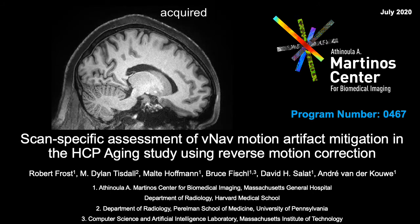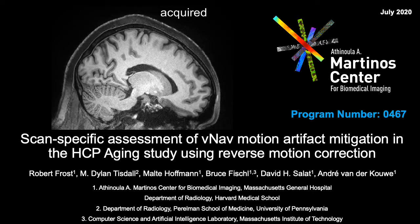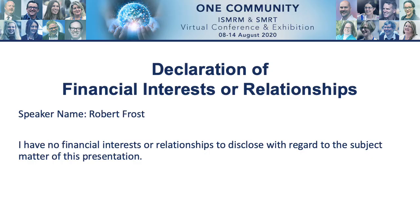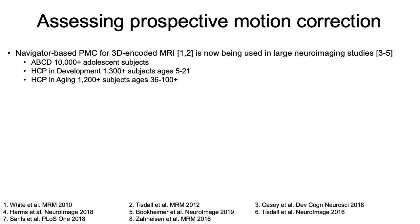Hi everyone, thanks for watching this talk on assessment of prospective motion correction in the HCP aging study. I have nothing to declare. Navigator-based prospective motion correction for 3D encoded MRI is now being used routinely in large neuroimaging studies such as ABCD and the Human Connectome Projects in development and aging.